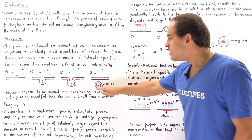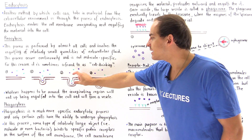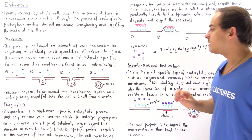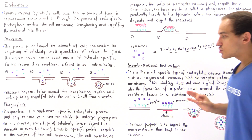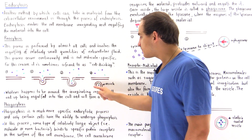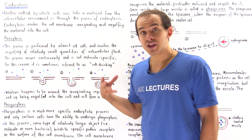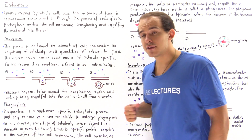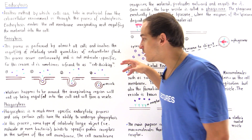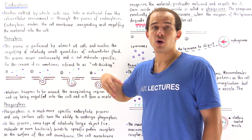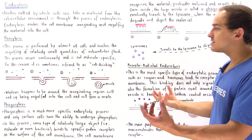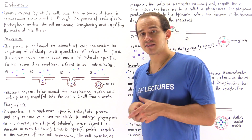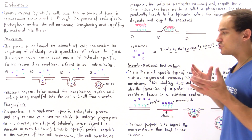This vesicle contains membrane that comes from the cell, which serves to protect the cell from whatever might be inside the vesicle. That vesicle is then transported to the lysosome. The lysosome fuses with the vesicle and the material inside is digested.